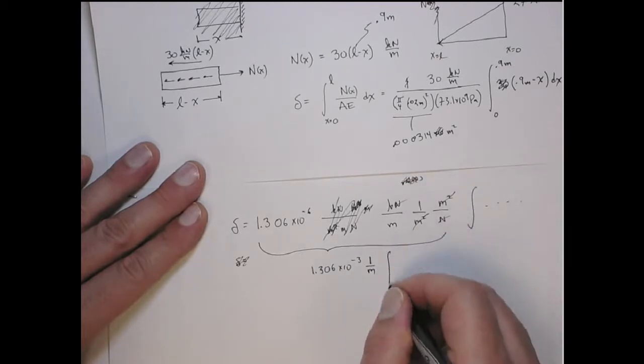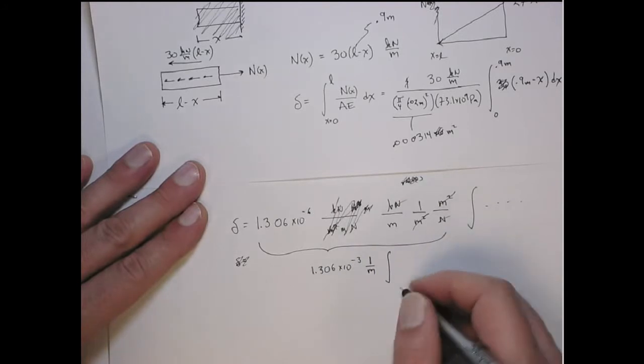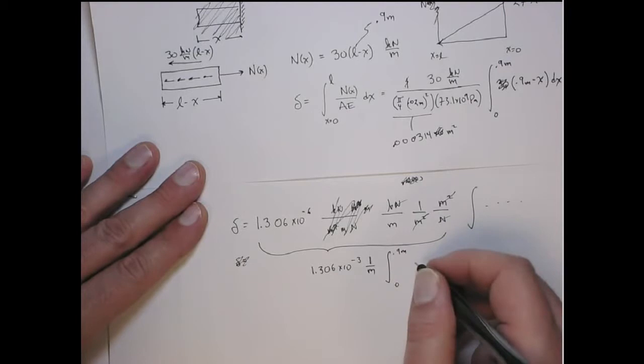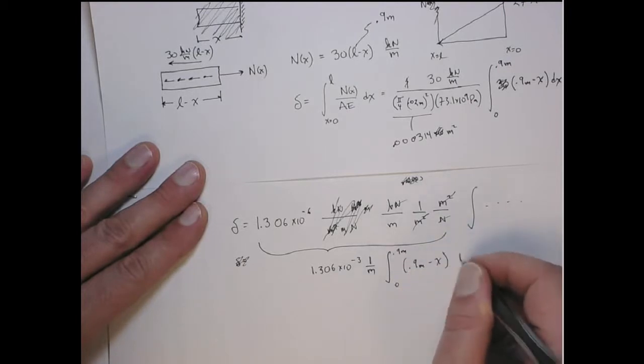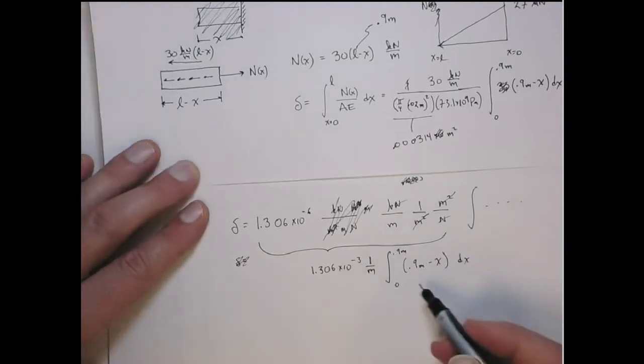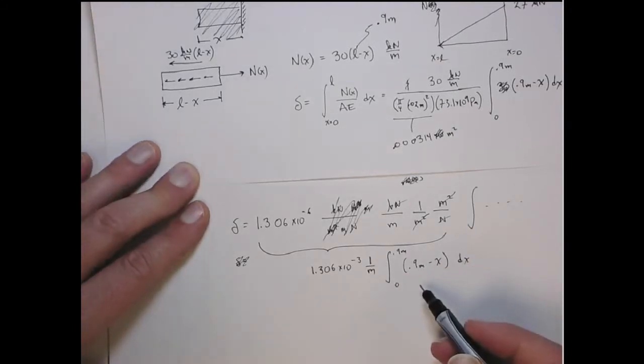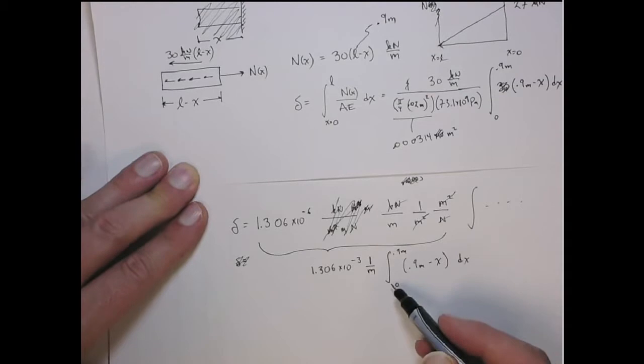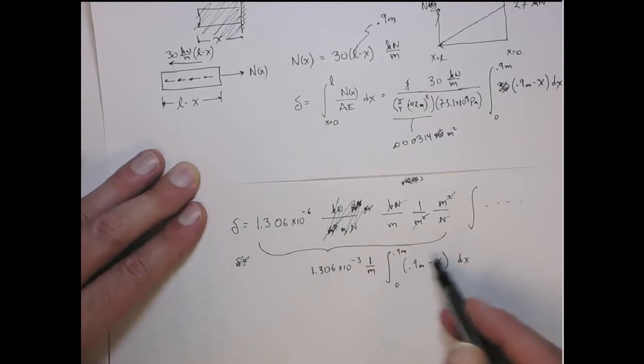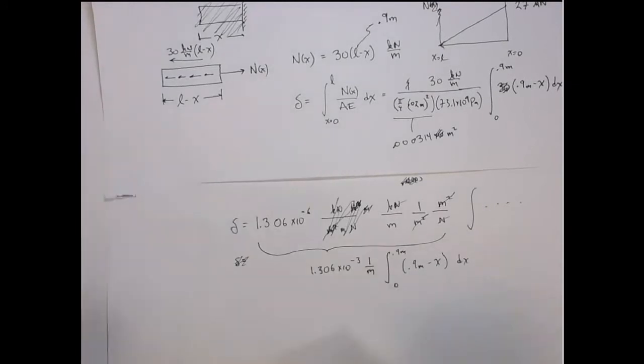So I didn't write the integral out. But then next to this we get the integral from 0 to 0.9 meters of 0.9 meters minus x dx. And so you can see what I'll get here is a meter squared in units, and then that'll give me units in meters. So let's finish the integral here.